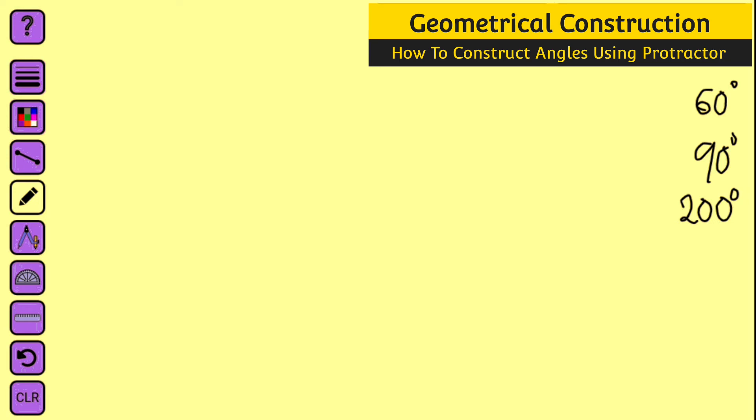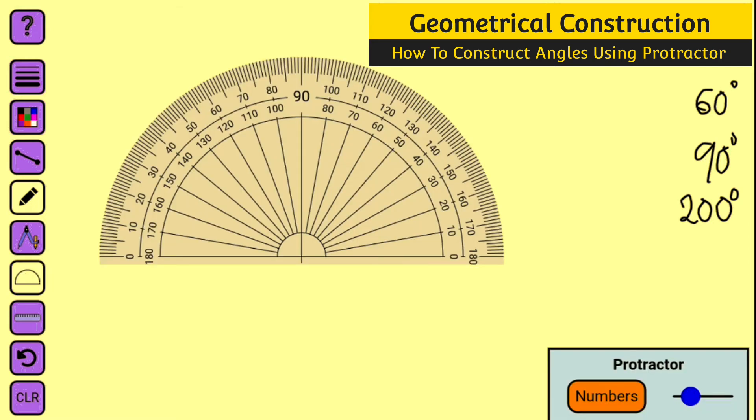Now let us go ahead and construct 200 degrees. But before we start, let us observe the angles on our protractor — you can see it only goes from 0 to 180 degrees. So how can we construct 200 degrees? We know that we need 20 degrees extra to complete 200 degrees. Let us construct our straight line.